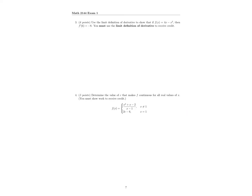On to question 3: we want to use the limit definition of the derivative to show that f prime of 6 is equal to negative 8. Remember, f prime of x equals the limit as h approaches 0 of f of x plus h minus f of x over h. So let's fill in: we get 4 times x plus h minus x plus h squared, then subtract f of x, all over h. Now let's expand — we get 4x plus 4h minus x squared plus 2xh plus h squared, then minus 4x plus x squared.